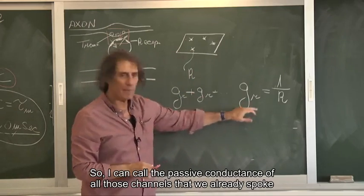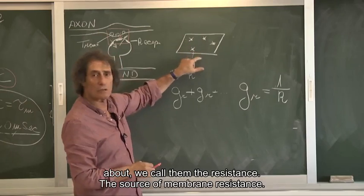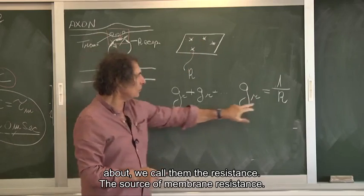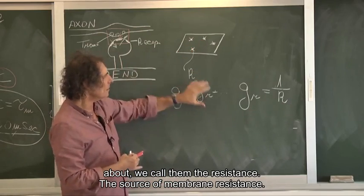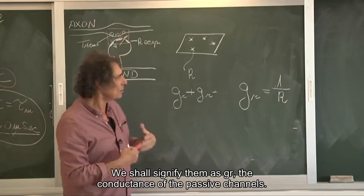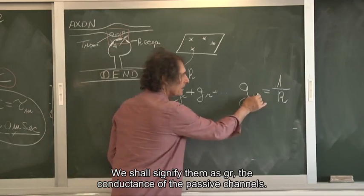So I can call the passive conductance of all those channels that we already spoke about, we call them the resistance, the source of membrane resistance, we shall signify them as GR, the conductance of the passive channel.